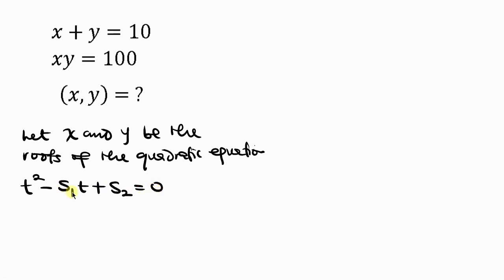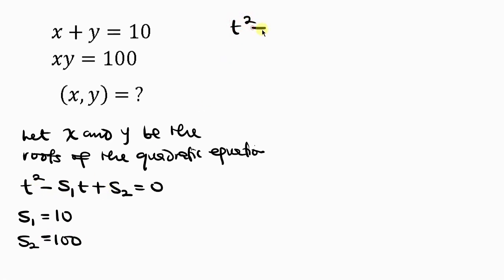S1, the sum of roots x plus y, is 10, while S2, the product of roots xy, is 100. Substituting: t squared minus 10t plus 100 equals 0. From this quadratic equation, a is 1, b is negative 10, and c is 100.